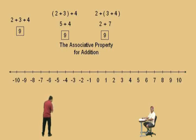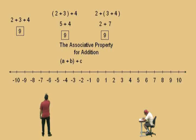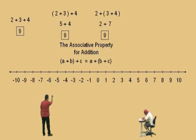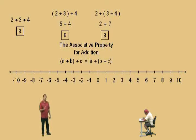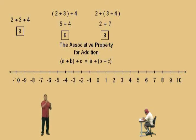What the associative property of addition states is this: if you have the quantity A plus B in parentheses — meaning you add A plus B first and then add C — you will get the same result if you were to add the quantity B plus C first and then add it to the A. Basically, the associative and commutative properties — it's a tongue twister — when you put those together, you can show that whenever you have numbers all being added together, you can add them in any order, only if they're all being added together.